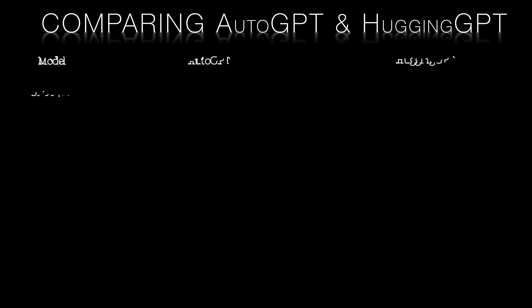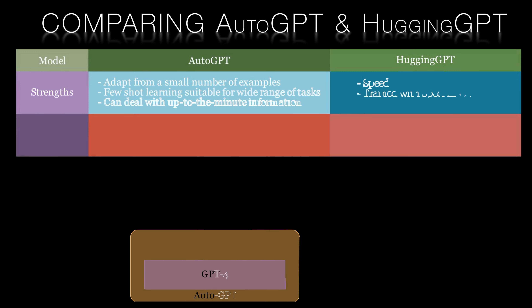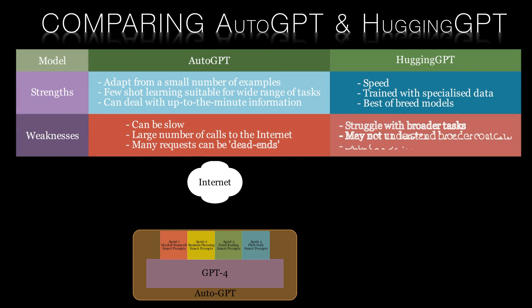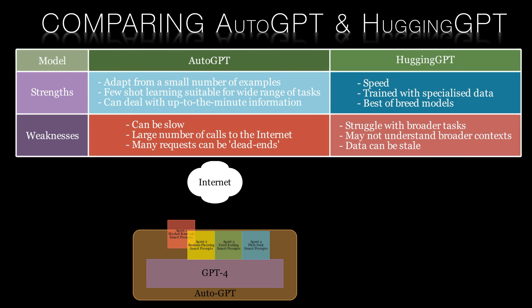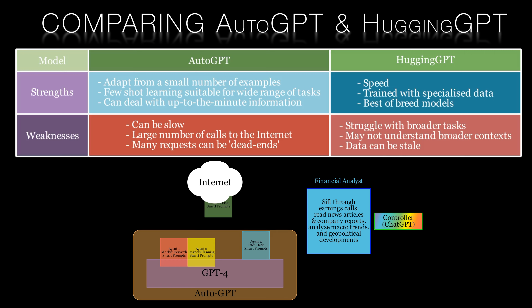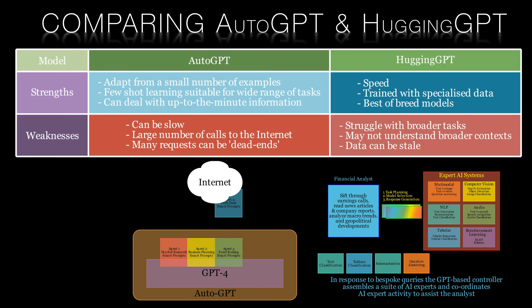Auto-GPT's strength lies in its ability to adapt and learn from a few examples. Its few-shot learning capabilities make it suitable for a wide range of tasks. However, this approach can sometimes be slow, as it requires searching the internet for relevant information to use in its learning process. On the other hand, Hugging-GPT's strength is its speed and specialized expert models, which can quickly perform tasks within their domain. The downside of Hugging-GPT is that it can be less flexible and less up-to-date compared with Auto-GPT.